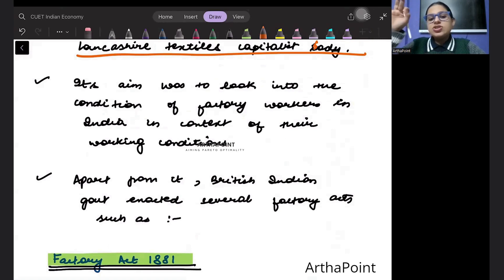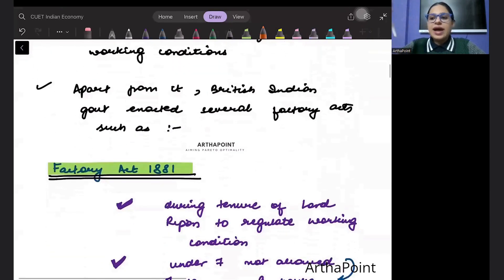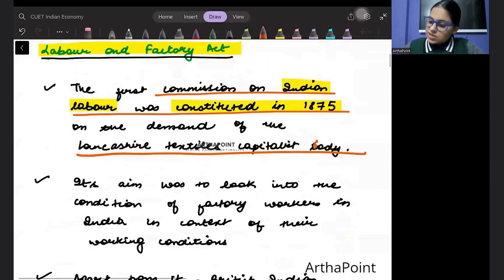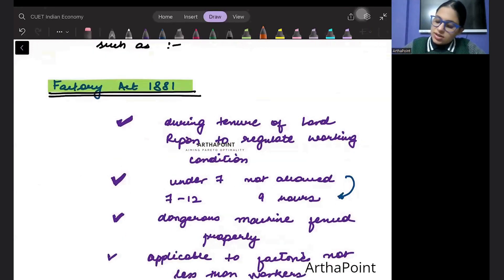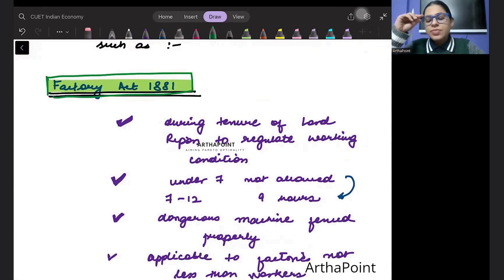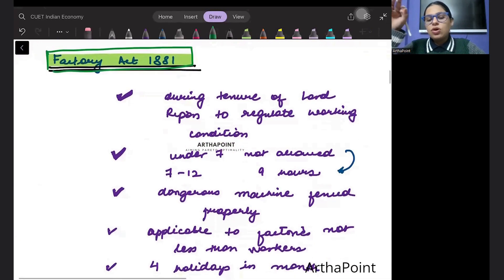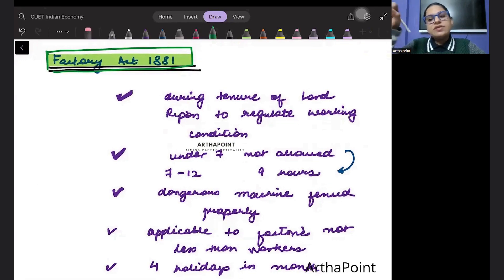Apart from it, British Indian government enacted other acts also. This was the first act that came in 1875, but apart from this we had different acts. Another factory act came in 1881 under Lord Ripon and the aim was to regulate the working condition.